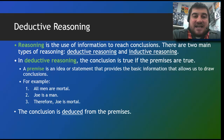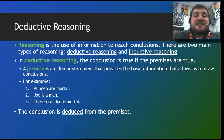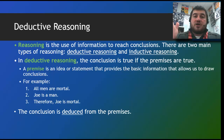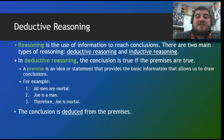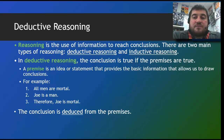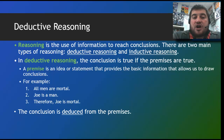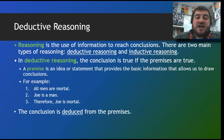Let's get into reasoning. Reasoning is how we use information to reach conclusions, and there are two types: deductive and inductive. Deductive reasoning goes from broad to general — picture an upside-down triangle. In deductive reasoning, the conclusion is true if the premises are true. A premise is an idea that provides the basic information and allows us to draw conclusions. For example: all men are mortal — true. Joe is a man — true. Therefore, Joe is mortal. The conclusion is deduced from the premises.